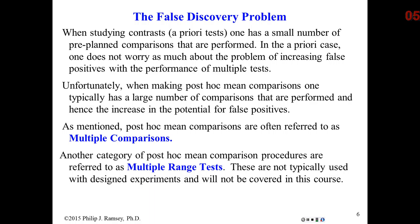We're going to call these multiple comparisons — they are known by many different names in statistics. We're going to look at four methods supported in the JMP software, but dozens of these tests exist of all types. People have been studying this problem since Fisher's initial work with ANOVA and design of experiments in the 1920s, and this issue of false discoveries continues to attract a lot of attention.